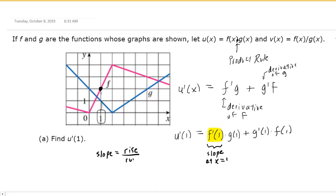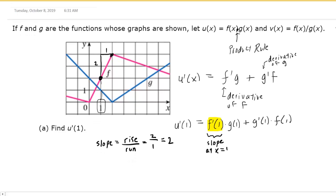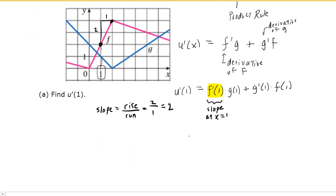To use rise over run, we would actually need two points. So it might be helpful to pick another point in addition to the one that I've already marked. Perhaps we can use this one for simplicity. And so if we move from this point to the other point, we would rise two units and then run one unit. So that would mean that the slope would equal 2 divided by 1, or in simpler terms, 2. So we now have the value of f prime of 1. That would just equal 2.